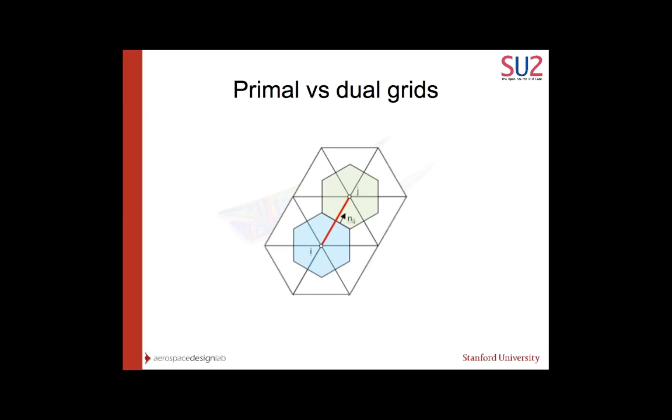A distinction needs to be made between primal and dual grids. When you make your mesh in Pointwise or however else you make it, and you give that mesh to SU2, that mesh is what we call the primal grid. In this picture here, the black lines are the primal grid. If you connect the midpoint of each one of these cells of the primal grid, you make these new shapes. These new shapes make up what's called the dual grid.